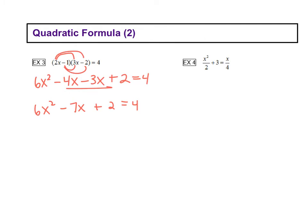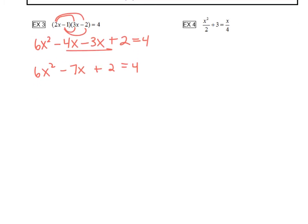Remember, we do want 0 on one side, so I'm going to subtract 4 from both sides. So we have 6x squared minus 7x minus 2 equals 0. I just did 2 minus 4, I combined those like terms.